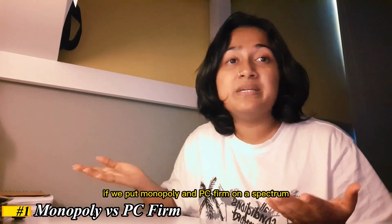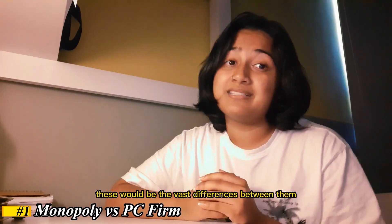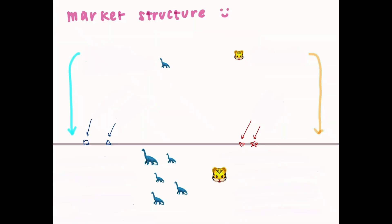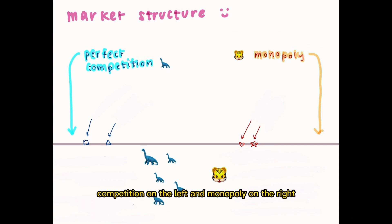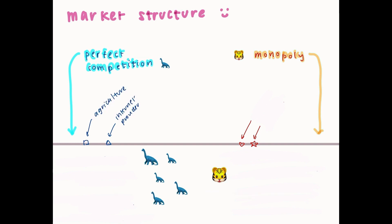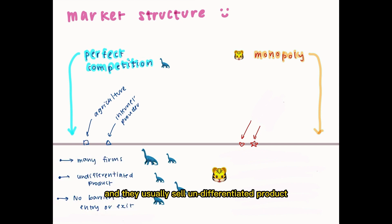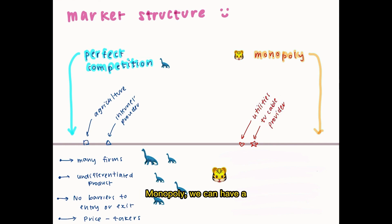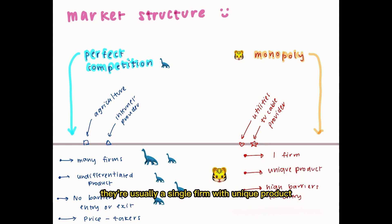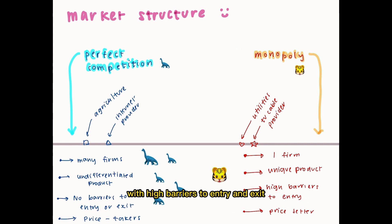If we put Monopoly and PC Firm on a spectrum, these would be the vast differences between them. According to this market structure spectrum, we can see that there is perfect competition on the left and Monopoly on the right. A few examples of perfect competition would be agriculture or internet providers. There are usually many firms and they usually sell undifferentiated products with no barriers to entry and exit, and they're usually price takers. For Monopoly, we can have a TV cable provider with utilities as an example. They're usually a single firm with a unique product, with high barriers to entry and exit, and they're usually a price setter.